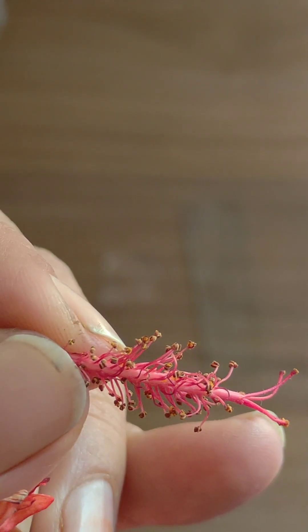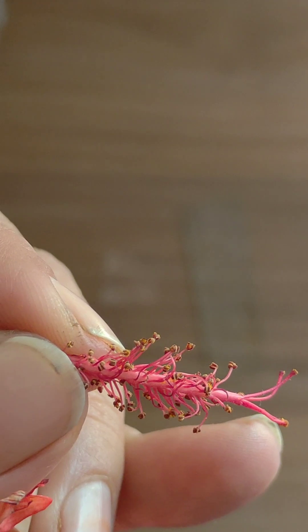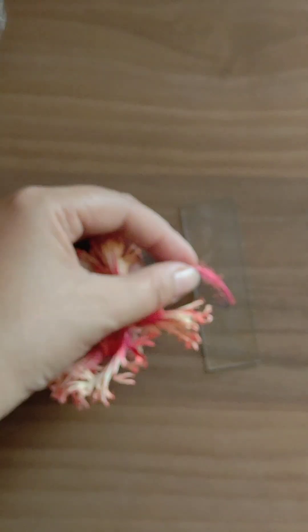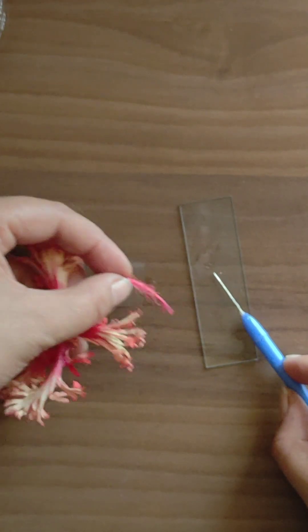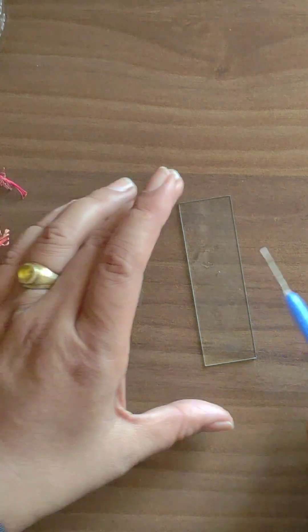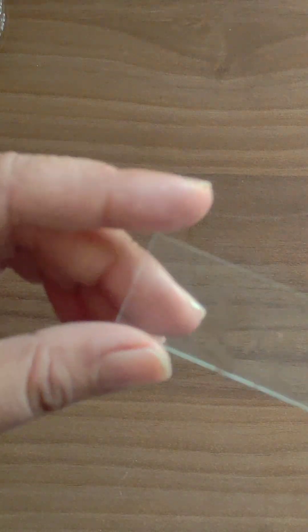You have to remove it very carefully and place it on the slide. With the help of needle, you can remove it. See, this is the pollen grains.